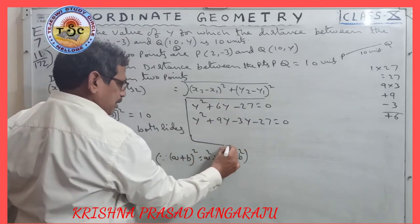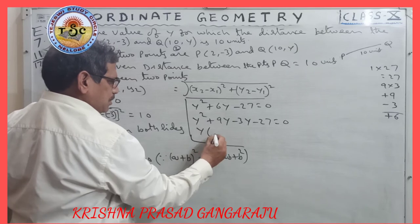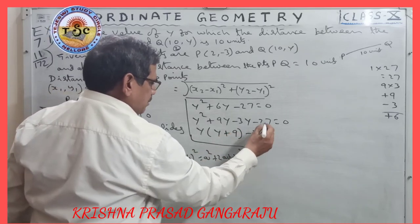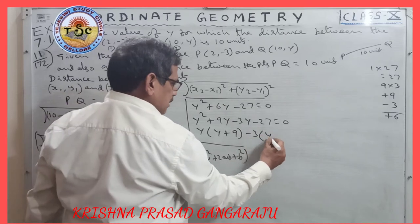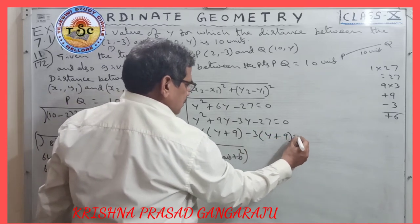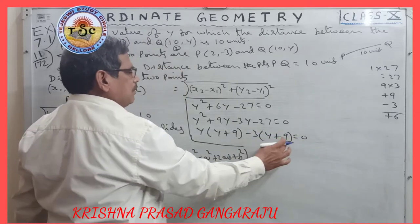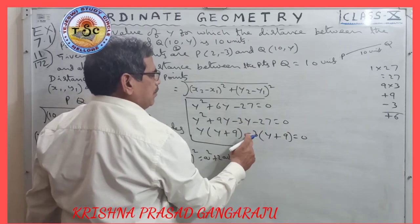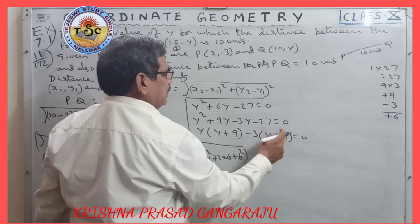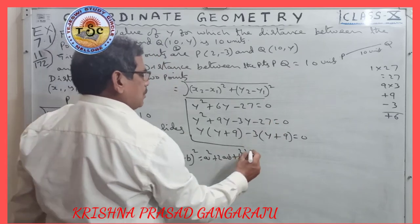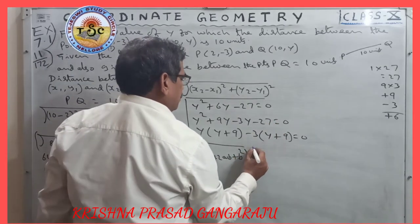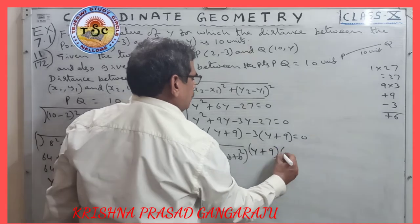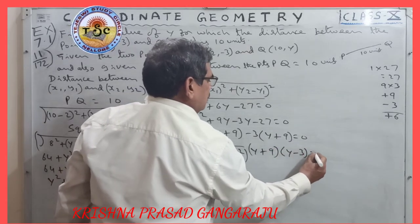So splitting the middle term: y² + 9y − 3y − 27 = 0. Grouping: y(y + 9) − 3(y + 9) = 0, which gives (y + 9)(y − 3) = 0.